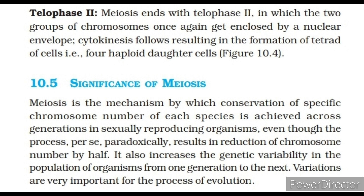Significance of meiosis: Meiosis is the mechanism by which conservation of specific chromosome number of each species is achieved across generations in sexually reproducing organisms, even though the process, paradoxically, results in reduction of chromosome number by half. It also increases the genetic variability in the population of organisms from one generation to the next. Variations are very important for the process of evolution.